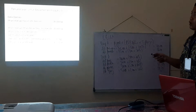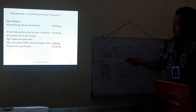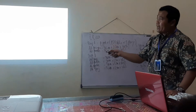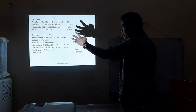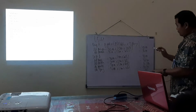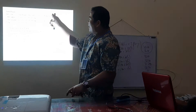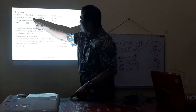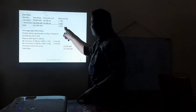Untuk Departemen Produksi A: yang masuk 40.000, yang selesai 35.000, yang sisa 5.000 — ini adalah skedul kuantitas atau data operasi. Data biaya kemudian dibagi dengan equivalent unit yang sudah dihitung. Untuk Departemen A: equivalent unit persiapan 40.000 dan pemasakan 36.000. Biaya persiapan 70 juta dibagi 40.000, dan biaya pemasakan 162 juta dibagi 36.000.